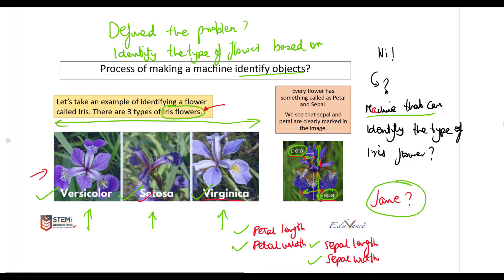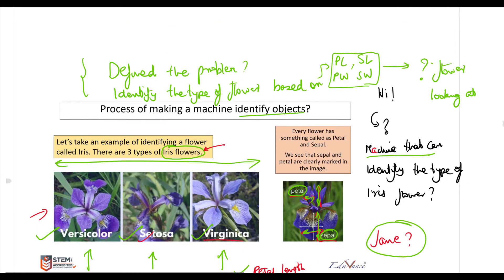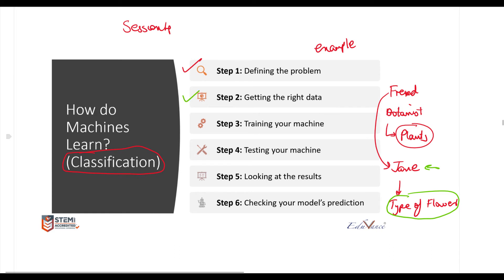The problem is: can we identify the type of flower based on petal length (PL), petal width (PW), sepal length (SL), and sepal width (SW)? Using these four parameters, can we determine what type of flower we are looking at? This is our problem statement.